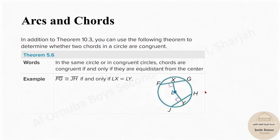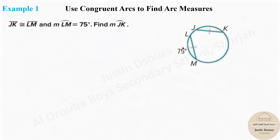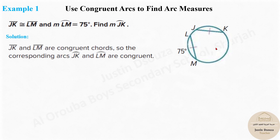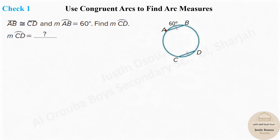With this knowledge we can easily solve these problems. Here, JK is congruent to LM — JK and LM are congruent chords. If arc LM is 75 degrees, what is arc JK? It should be 75 degrees, as we have seen in the previous theorems. Similarly, if lines AB and CD are congruent and arc AB is 60 degrees, then arc CD must be the same.